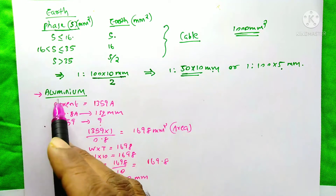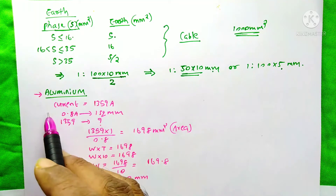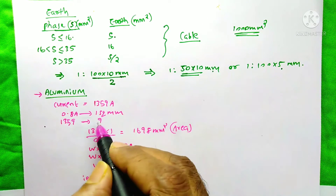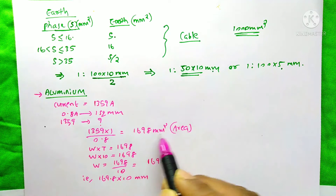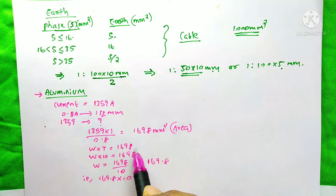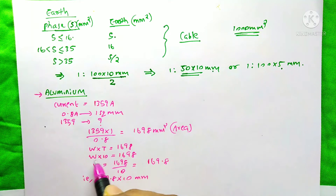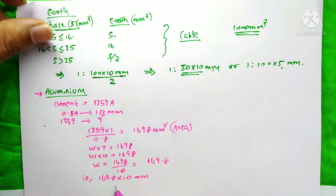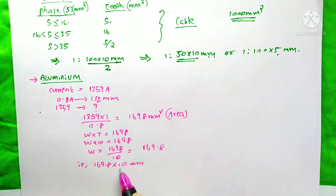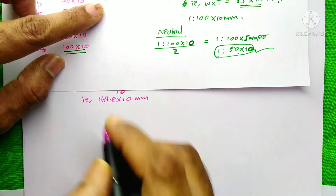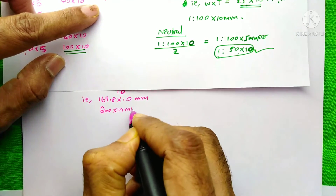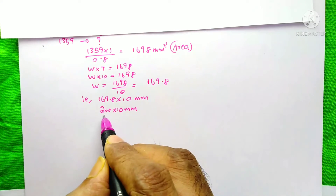For the previous example using aluminum instead of copper: 1359 amps requires 1359 × (1/0.8) = 1698 mm² of bus bar area. Fixing thickness at 10 mm, the width = 1698 / 10 = 169.8 mm. Checking the table, 169.8 mm is not available; the next size up is 200×10 mm, so we select 200×10 mm.